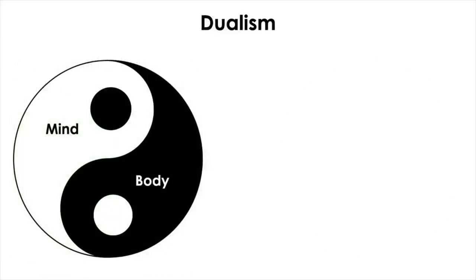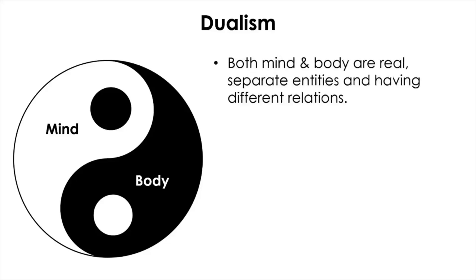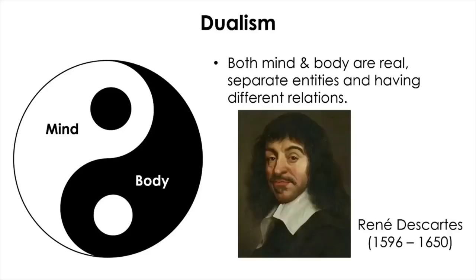As opposed to a monist, a dualist would think that both mind and matter are real and two separate entities having different relations. So this idea was first put forward by a French philosopher, René Descartes. Like other scientific ideas, there is no definitely right or wrong answers yet, and the debate between the ideas is still ongoing.